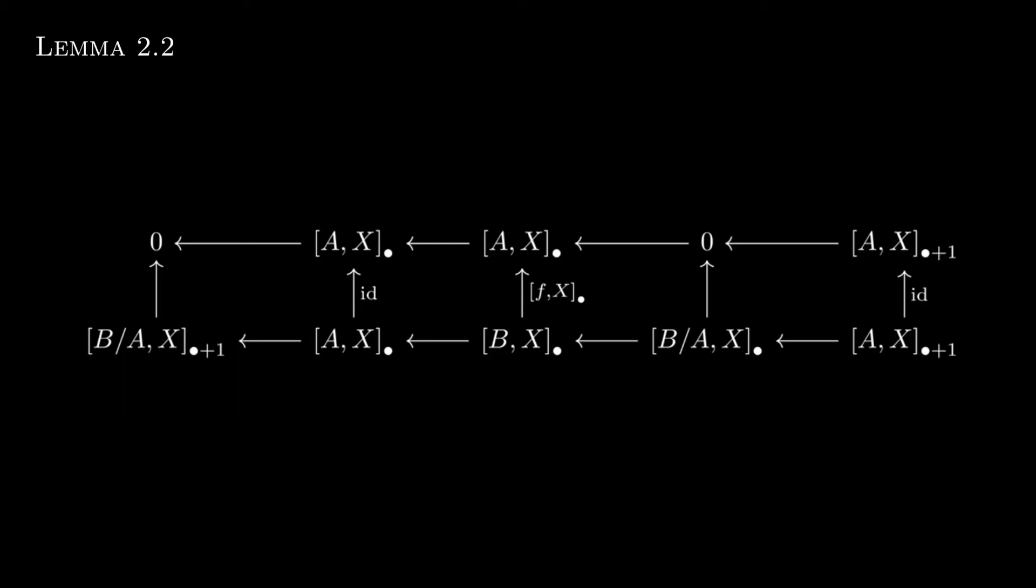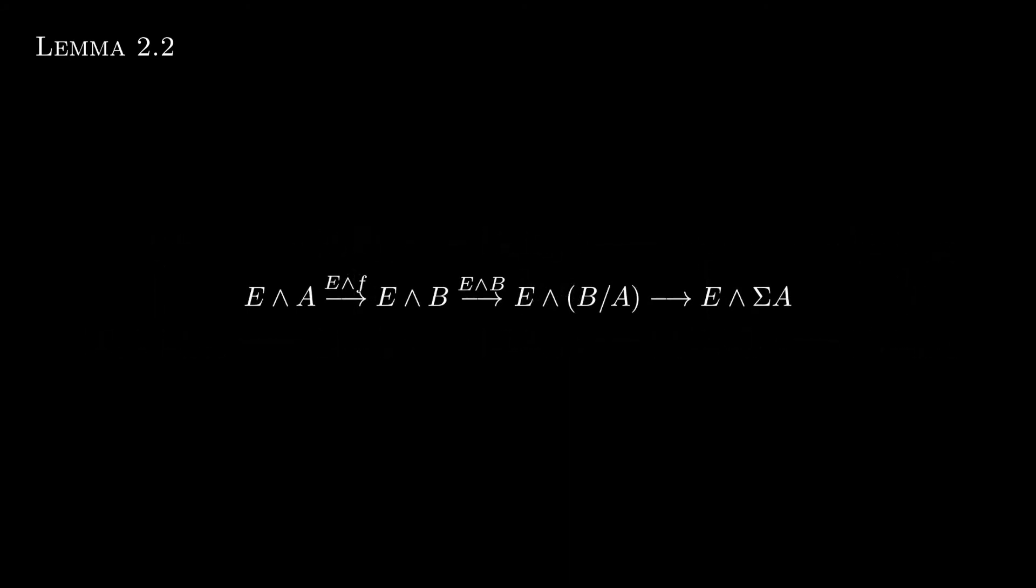Well, since the stable homotopy category is tensor triangulated, the smash product with E preserves homotopy cofiber sequences. So this is a homotopy cofiber sequence as well. Well, we are assuming that f is an E-equivalence, so now that the first morphism, E smash f, is an isomorphism. But again, if that is the case, then that implies E smash B/A is 0, i.e. that B/A is E-acyclic as desired.